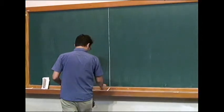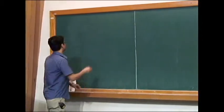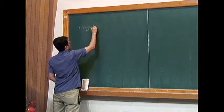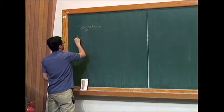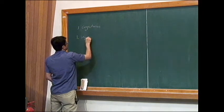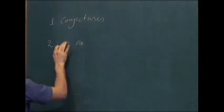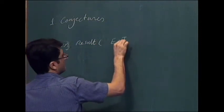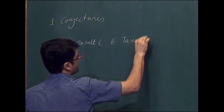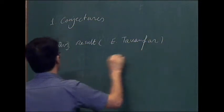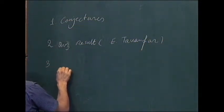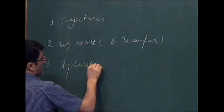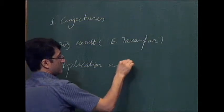So I decided to take the advantage to talk here about those big conjectures and also my work which is related to those conjectures. I will talk about conjectures, then our results — this is a joint work with Ehsan Tavanfar — and the third part of my talk will be about the applications in the theory of residual intersection.